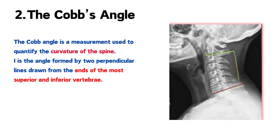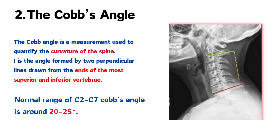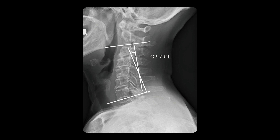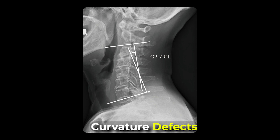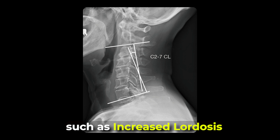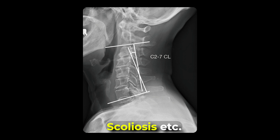The second thing is the Cobb's angle. It is used to quantify the curvature of the spine. It is formed by drawing perpendicular lines on the most superior vertebra and the most inferior vertebra seen on the x-ray image. An increase or decrease in this angle signifies curvature defects such as increased lordosis, scoliosis, etc.